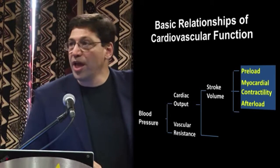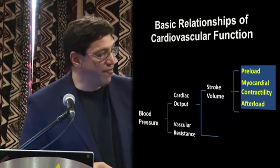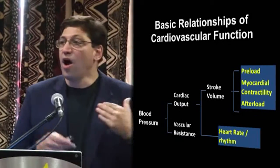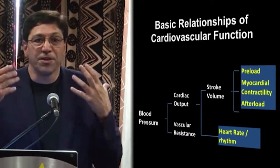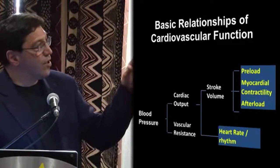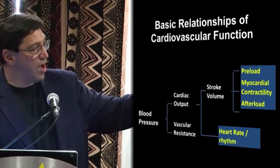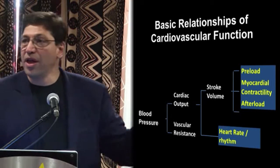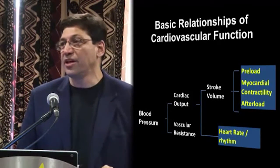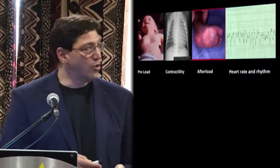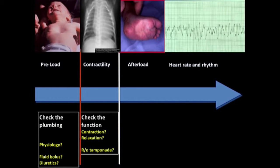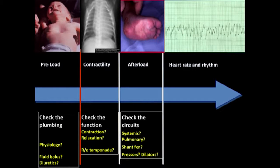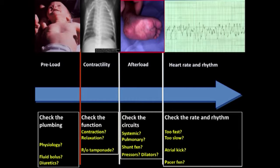The monitoring and control of four things — preload, contractility, afterload, and heart rate — are all the same principles of management and are not complex concepts. Figuring out what preload, contractility, afterload, and heart rate to target can be taught and learned in the pre-hospital setting. We check the plumbing, we check the function, we check the circuits, and then we check the rate and rhythm. We have simple interventions that can address each one.